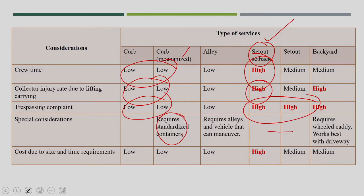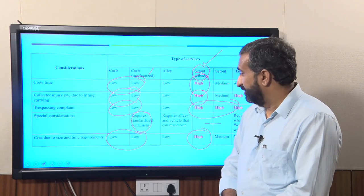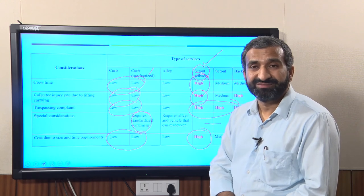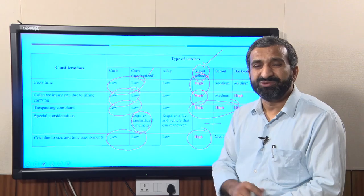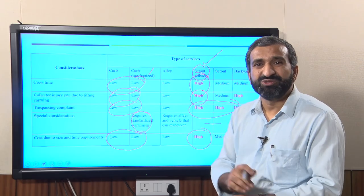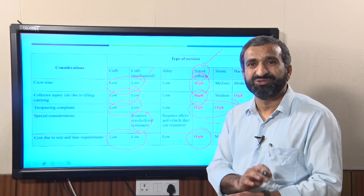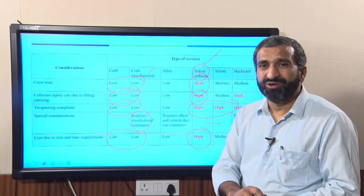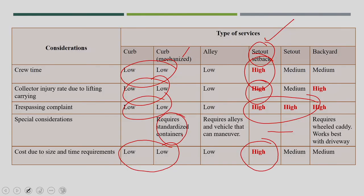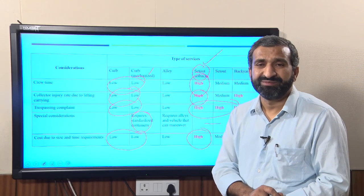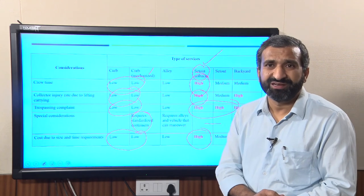Regarding cost due to size and time required: curb service is low and highly economical, but set-out set-back is very costly based on size and time requirement. That is why in older days, curb services were popular in India for household waste collection. However, as we saw from photographs, many issues arise with scavenging and littering in curb services. To avoid those problems, set-out set-back service was introduced, but it is a very costly process and requires some money from house owners because services need to be paid for.